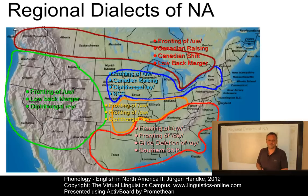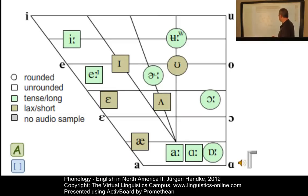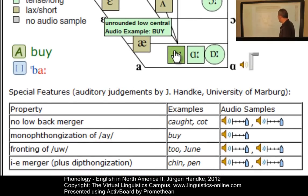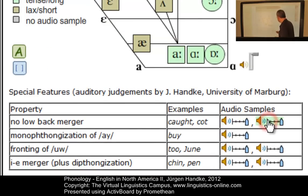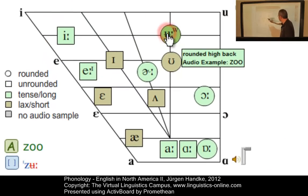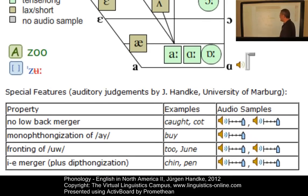Let's listen to a speaker from the South — here is a speaker from Jackson, Missouri. Listening to examples, we can typically find the monophthongization of I. The two vowels in 'cot' and 'caught' are not merged. We also typically have the fronting of U. And finally, the IN-END merger we listed earlier — in words such as 'chin' and 'pen,' there is no difference between the two vowels.